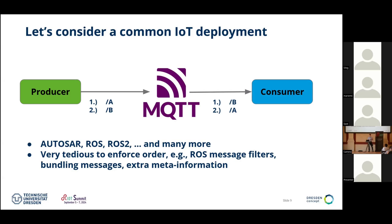MQTT doesn't make any guarantees about ordering. You announce topics A and B, and at the other end you get a completely different order. Those MQTT libraries just give you a function pointer to call when you get a message — those two functions potentially get called in an unintended order. This is very prevalent. We heard yesterday the talk about Autosar — you wouldn't hack a car — and Autosar also suffers greatly from this. There's a lot of extra code in place to check for such problems at the points where it matters.